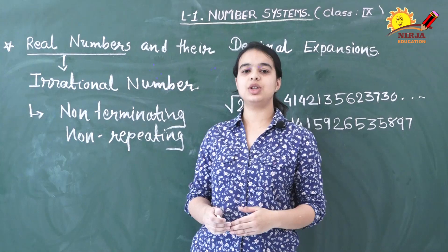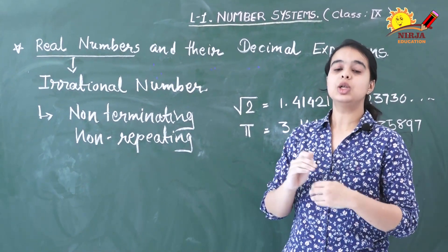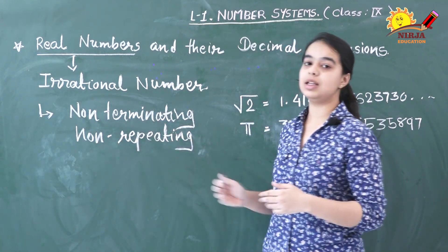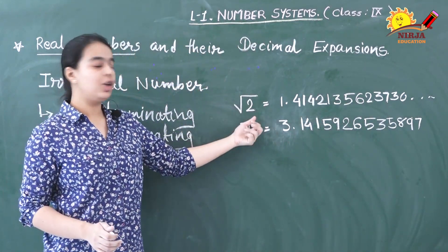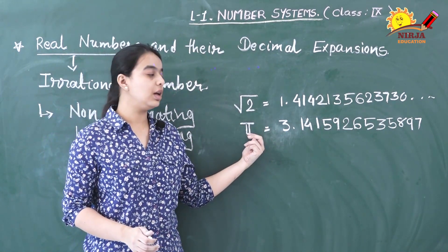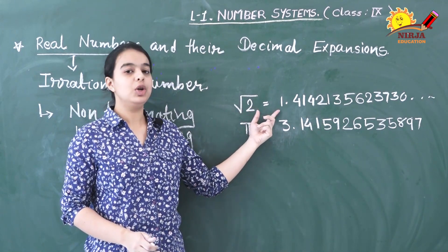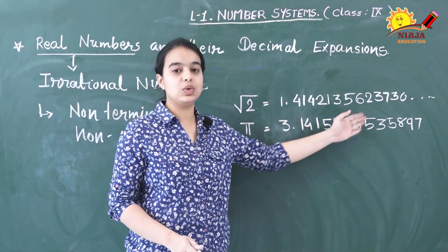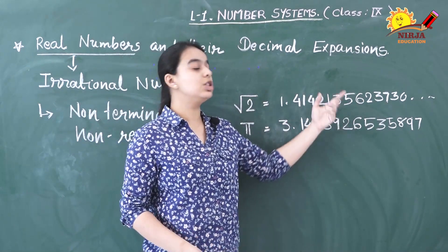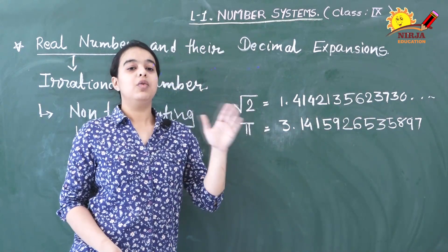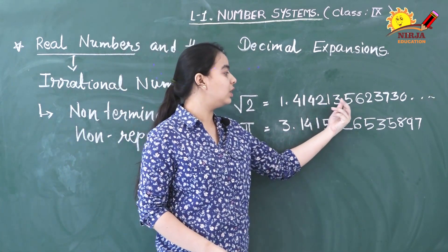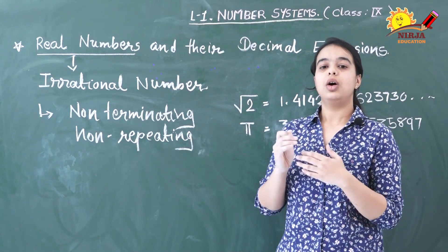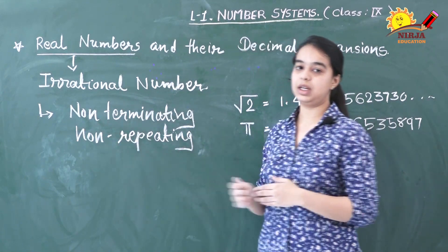We have seen the decimal expansion of rational numbers, but what about the decimal expansion of irrational numbers? If we do the decimal expansion of an irrational number, we will always get a non-terminating non-repeating decimal expansion. Here I have listed 2 examples — √2 and π, which you all know are irrational numbers. The decimal expansion of √2 is 1.4142135 and so on. For π we have 3.14159265 and so on. This expansion is non-terminating and also non-repeating — no group of digits repeats. So the decimal expansion of an irrational number always gives non-terminating non-repeating decimal expansion.